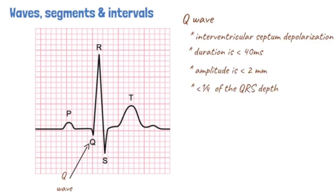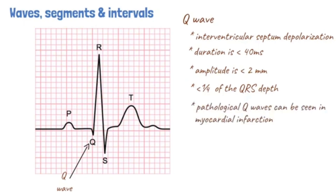Small Q waves are usually normal, but if they exceed the criteria listed above they are termed pathological Q waves and can be indicative of an evolving or past myocardial infarction. The first positive deflection in the complex is called an R wave. This is the largest wave in the QRS complex and represents the depolarization of the thick ventricular wall.